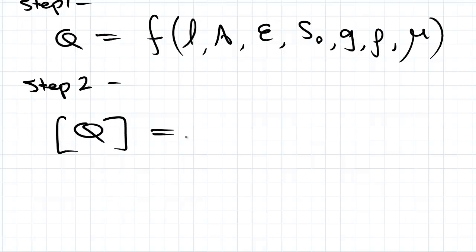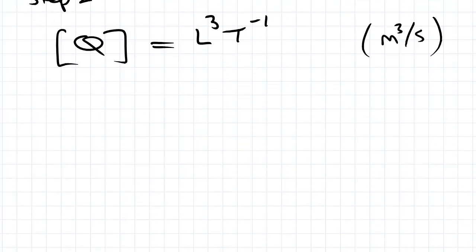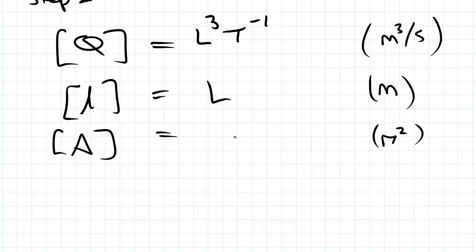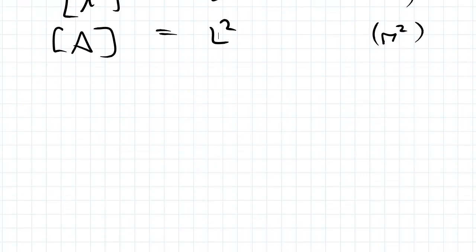Now I like to write down the units first, so I'll just do that over here: m cubed per second. So that's meters, is a length, length cubed per second time. Going on to length, equal to L, obviously that's meters. Area, that's meters squared, that's length squared. Roughness is millimeters or meters.